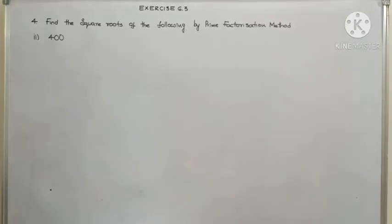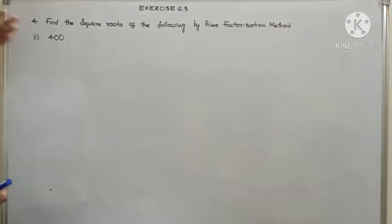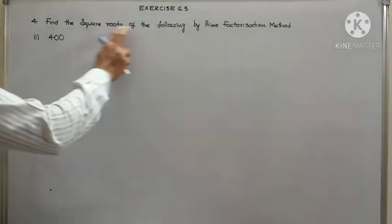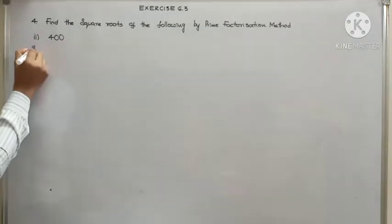A very pleasant morning children. Today we are going to continue our exercise 6.3. As you can see we are there at 4th row 1, 2nd one. That means finding the square root of the given numbers by prime factorization method.